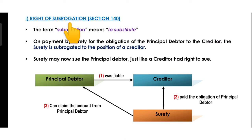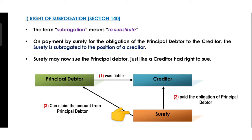The first right is the right of subrogation. The term subrogation means substitute. The principal debtor was liable towards the creditor, but because the principal debtor did not complete the payment obligation, the surety paid the creditor on the principal debtor's behalf. Now the creditor is out of the picture, and the surety steps into that position. Just as before, the creditor was asking the principal debtor for payment, now the surety will ask the principal debtor for that money. This is called the right of subrogation.